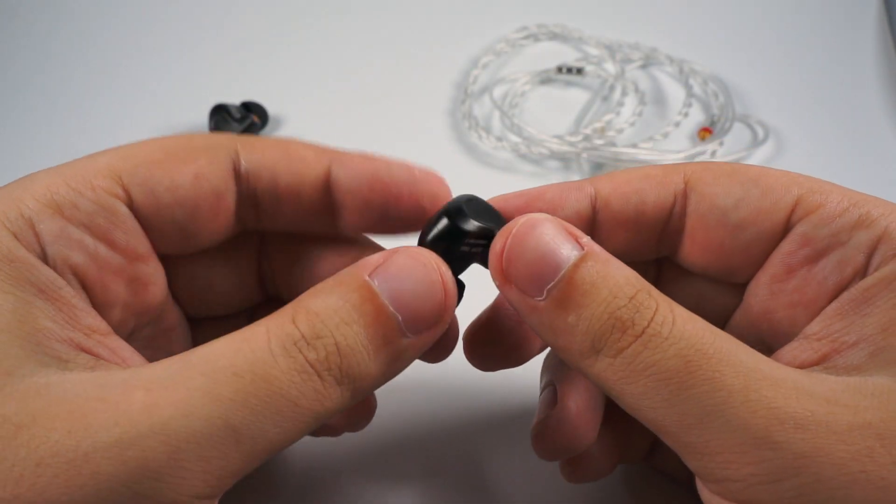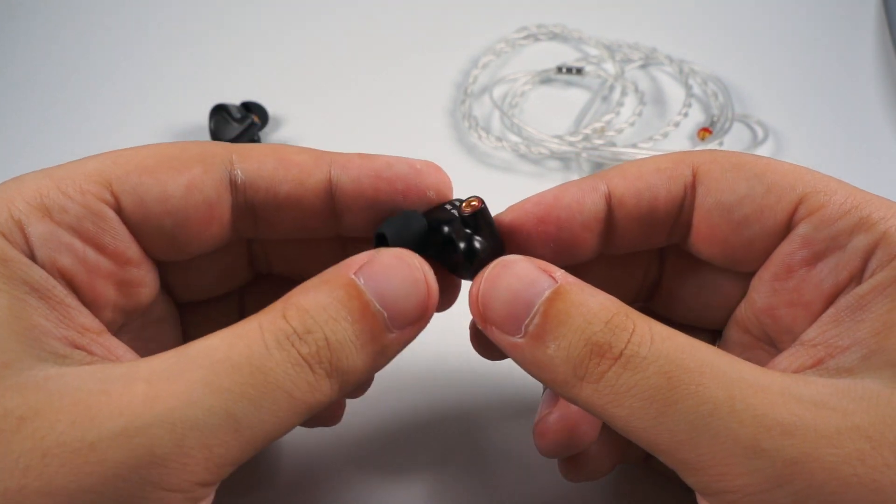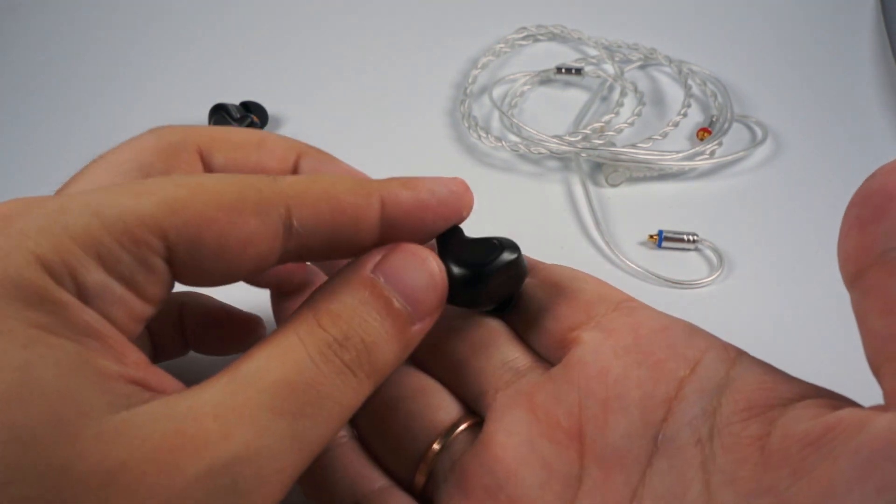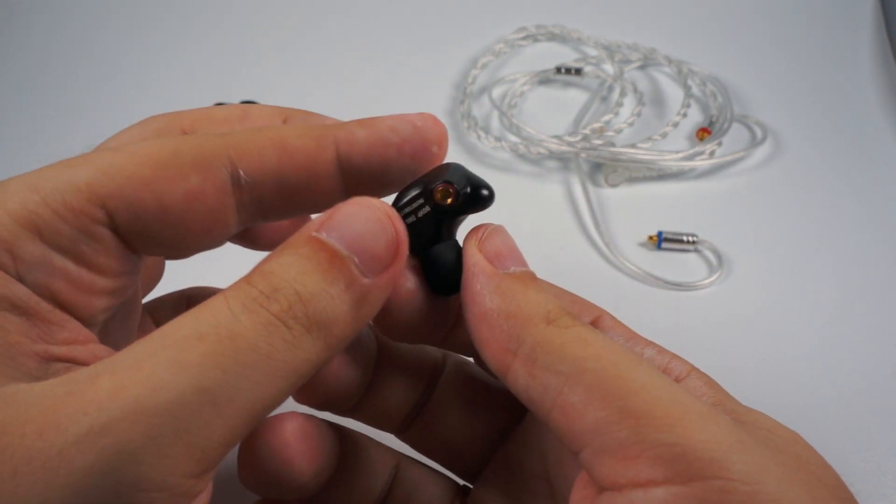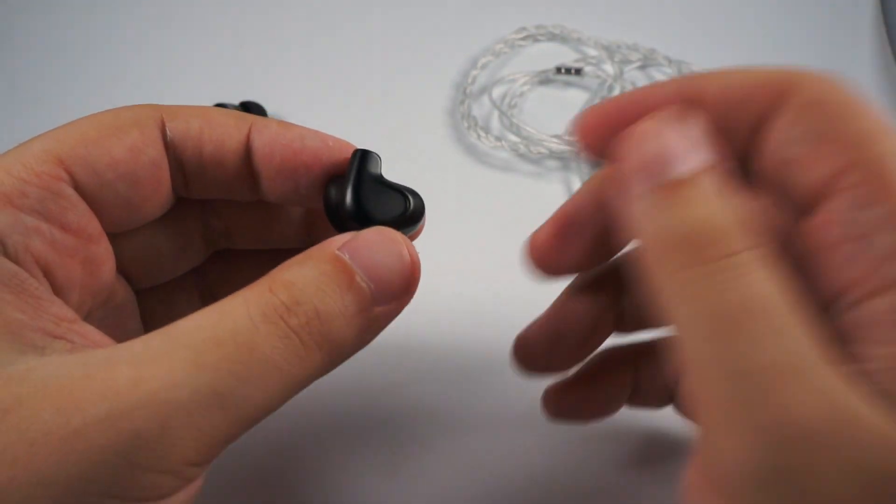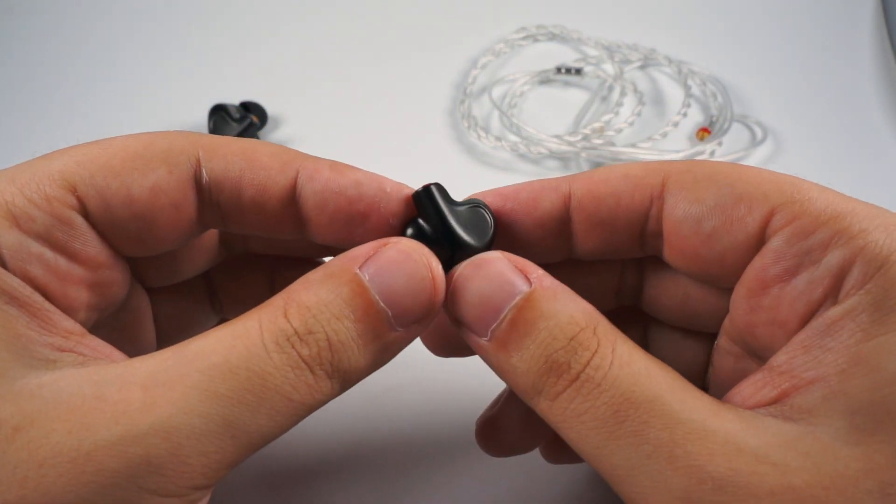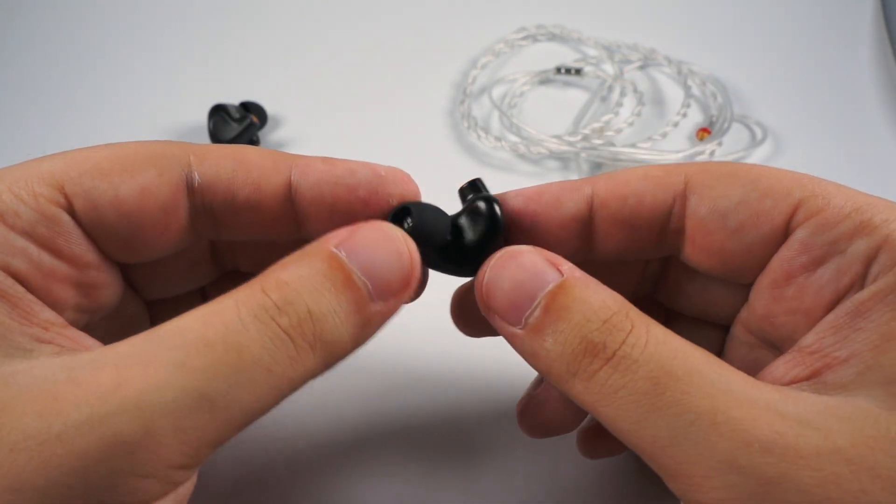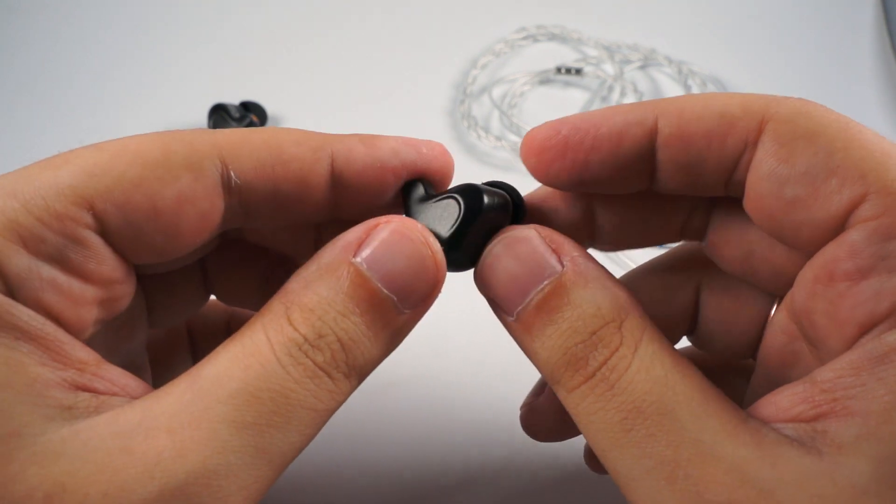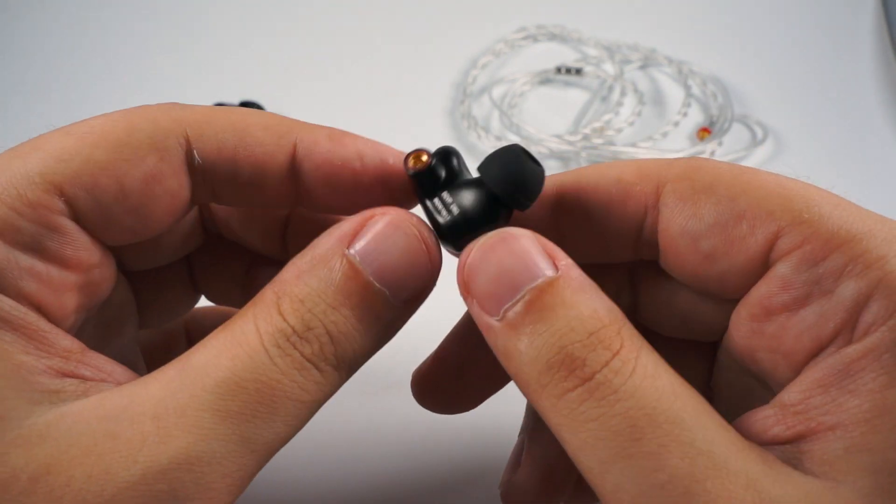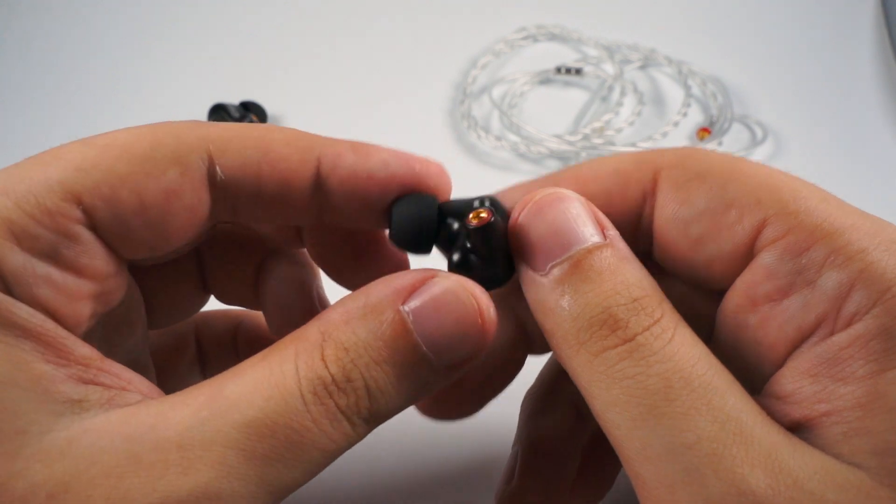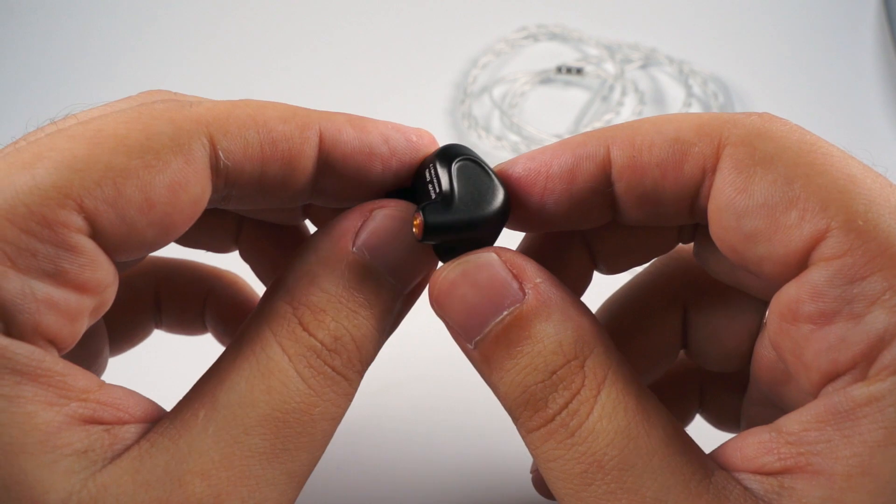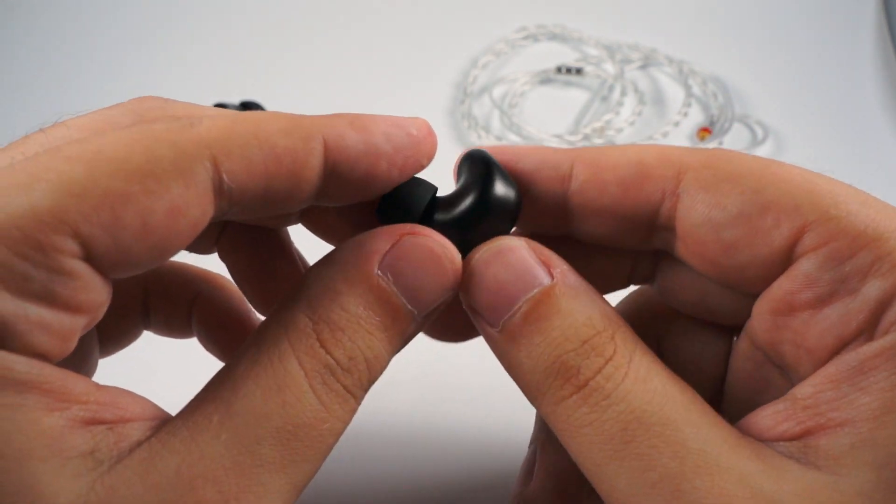Speaking about build quality and design, it is another model that looks much more expensive than it is in real life. If someone showed me this model and asked who made this and how much it costs, I would probably name some high-end IEM manufacturer and I'd start my guesses at probably three hundred dollars or even more because they look really nice. As you can see, the case has an anatomic shape and it's made of metal. I'm not really good in metal work, I don't know how they made it, but it looks really smooth, solid, and with nice finish.